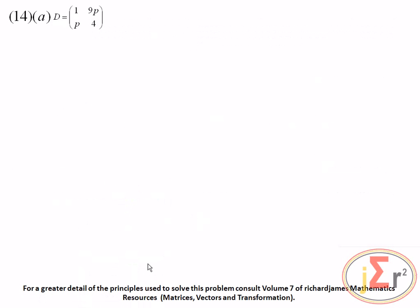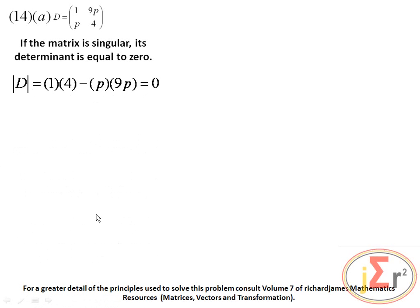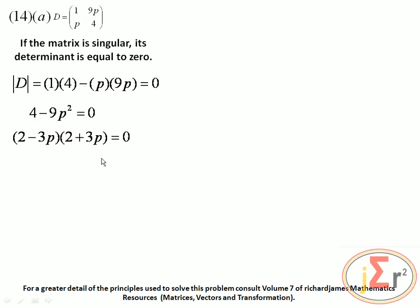We have a matrix D that is singular, so we need to find the values of P. If a matrix is singular, its determinant equals 0. The determinant is 1 times 4 minus 9P times P equals 4 minus 9P squared equals 0. This gives the difference of two squares: solving, P equals plus or minus two-thirds.